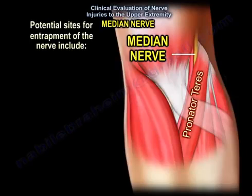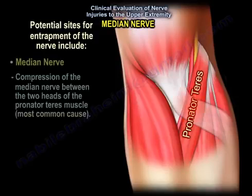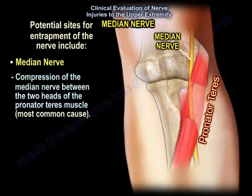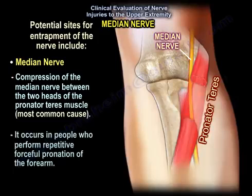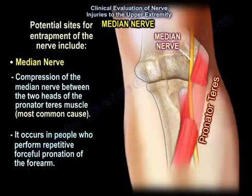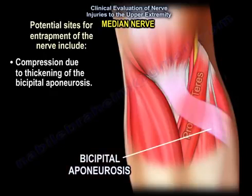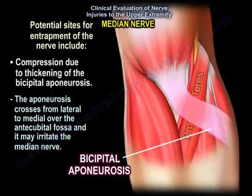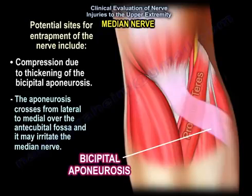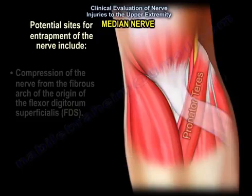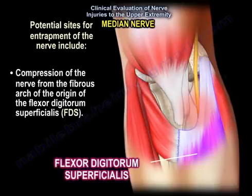Potential sites for entrapment include: the most common cause is compression of the median nerve between the two heads of the pronator teres muscle, occurring in people who perform repetitive, forceful pronation of the forearm. Compression can also occur due to thickening of the bicipital aponeurosis, which crosses from lateral to medial over the antecubital fossa and may irritate the median nerve. Another site is compression from the fibrous arch of the origin of the flexor digitorum superficialis.